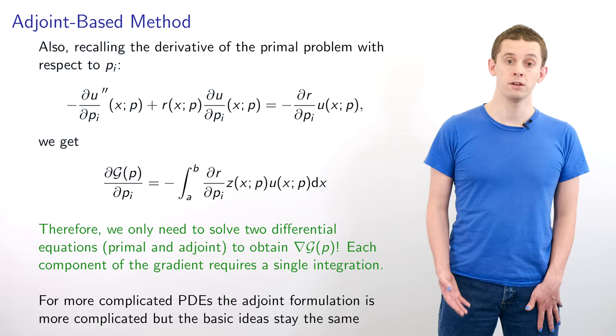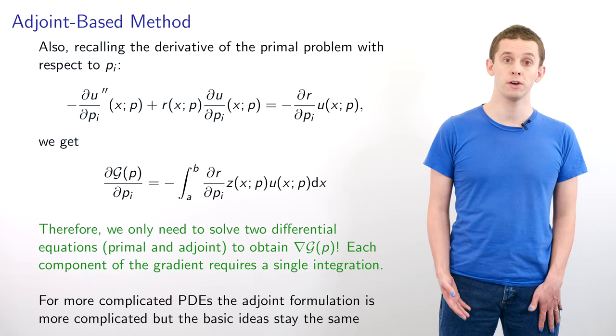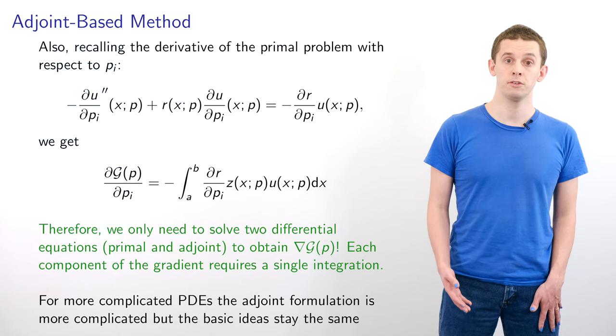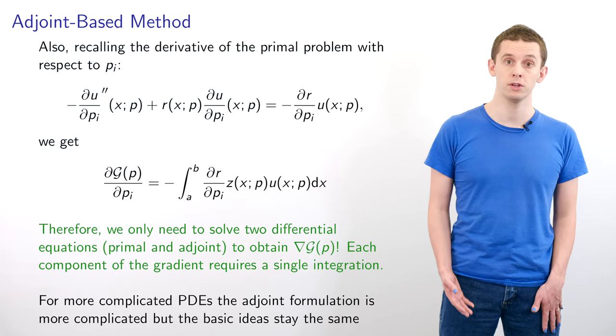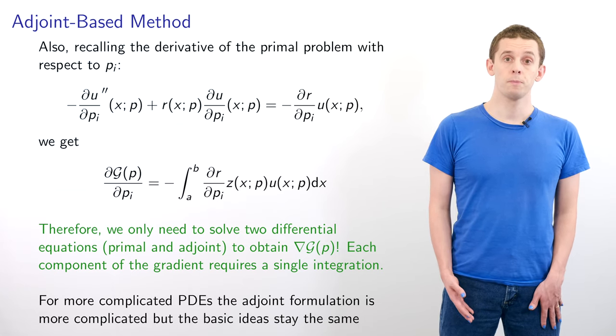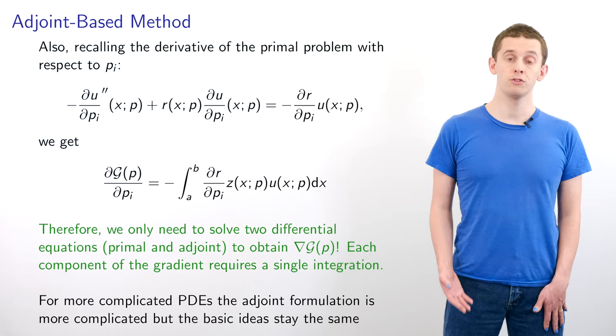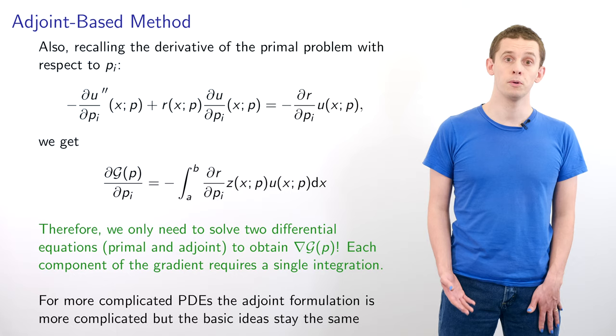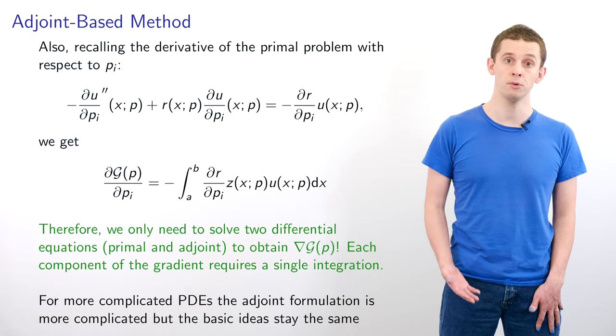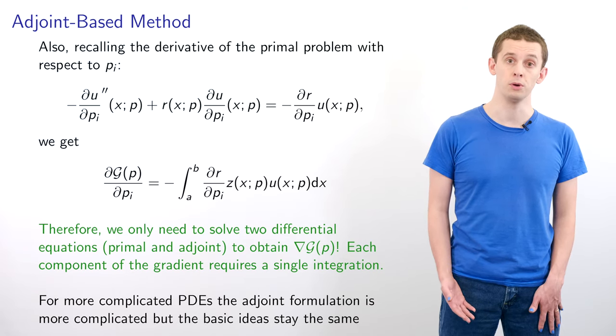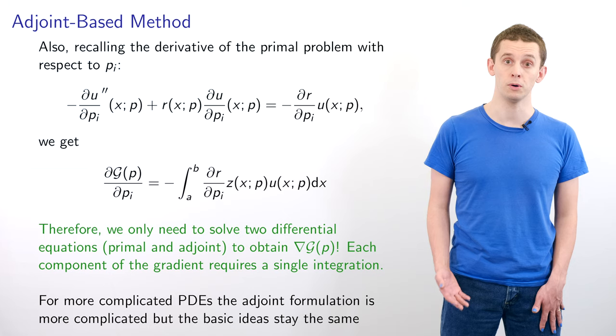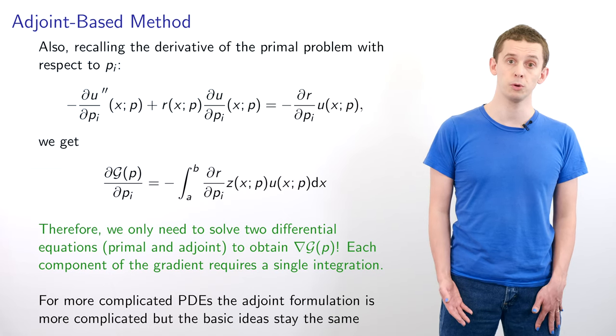To find our gradient of G all we need to do is solve our two differential equations for the primal and adjoint problems, and then each component of the gradient can be found using a single integration. In this problem we introduced the adjoint equation from thin air, but now we see how it's used we could take a different problem and follow these steps in reverse to derive the appropriate adjoint equation. For more complicated PDEs this formulation might become more complicated but in general the same principles apply.